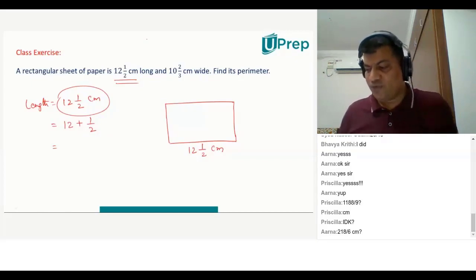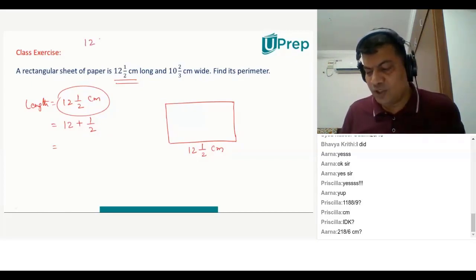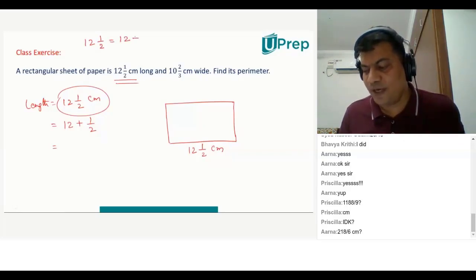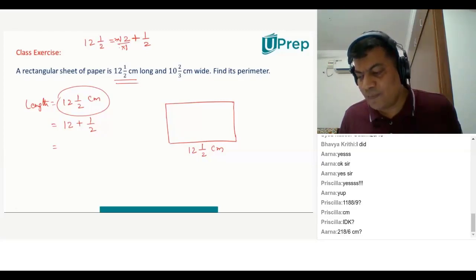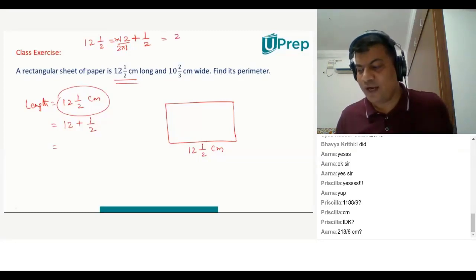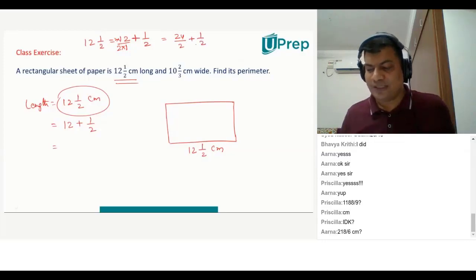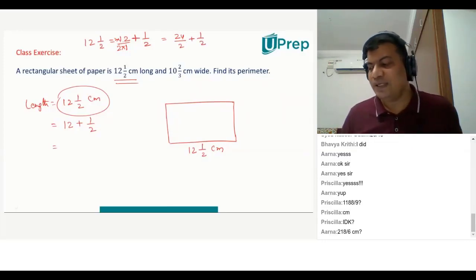Let's learn how do you convert a mixed fraction. For example: 12 and 1 by 2. We know it is 12 plus 1 by 2. So, I want to add this. Let me multiply 12 by 1 with 2 as well. So, we get 24 by 2 plus 1 by 2. We have converted this and we say it is 25 by 2.